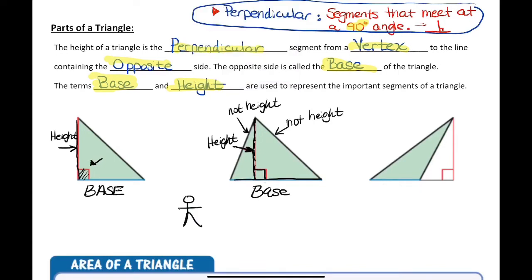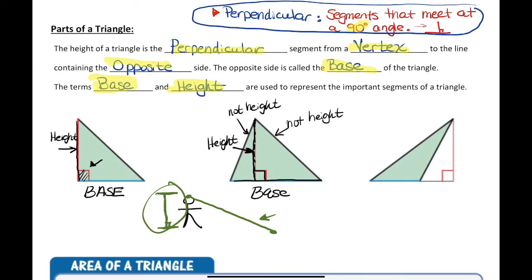Just think about measuring your own height — do you measure your height at an angle? Would you put a tape measure at the top of your head and measure diagonally to the floor? Or would you measure your height perpendicular to the floor? Obviously perpendicular is how you measure height. On the third example, the height is drawn outside of the triangle. The reason for that is this triangle is obtuse, so the base had to be somewhat extended to show that the height is perpendicular to that base.